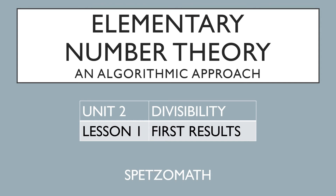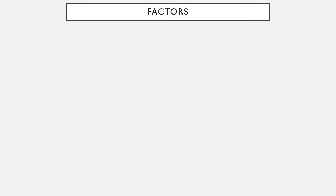In the first unit we went over some background information and learned how to go through flowchart algorithms. Now in the second unit we begin the actual number theory portion of the course with divisibility. So let's start off with talking about factors.